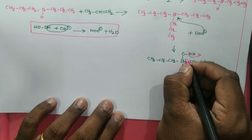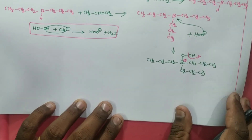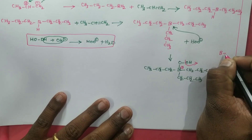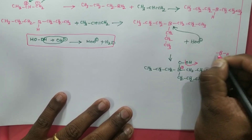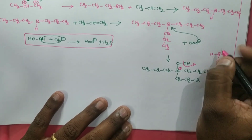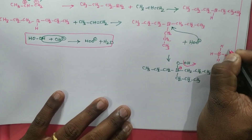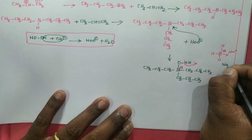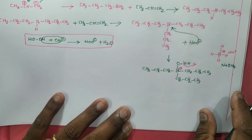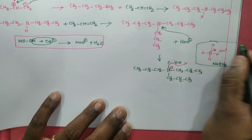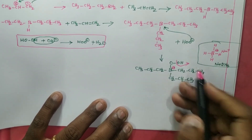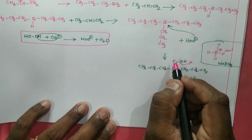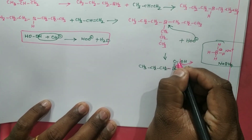Before that, we need to understand why a negative charge exists here. Compare it with NaBH4: boron bonded to four hydrogens is neutral. Add one more hydrogen and it becomes negative — that is why Na⁺ is paired with BH4⁻. Similarly, when boron forms a fourth bond here, it carries a negative charge. So OH⁻ wants to leave on its own, taking its electrons, leaving behind a positive charge as the bond breaks.